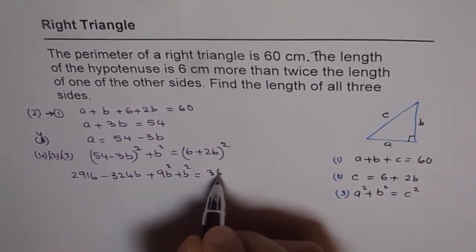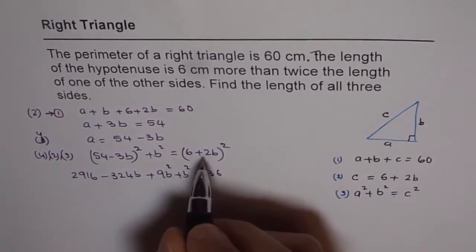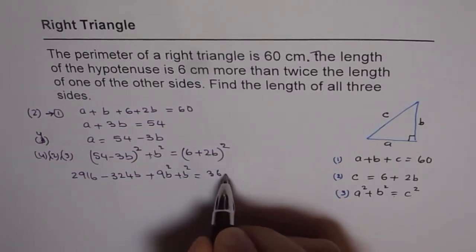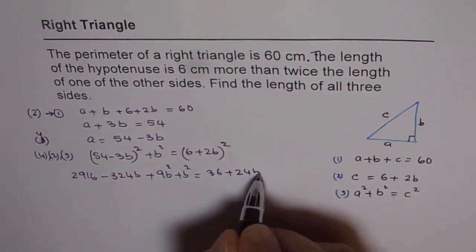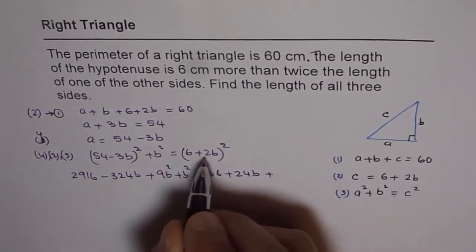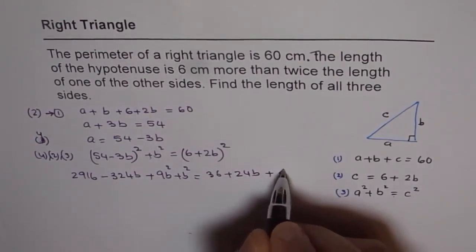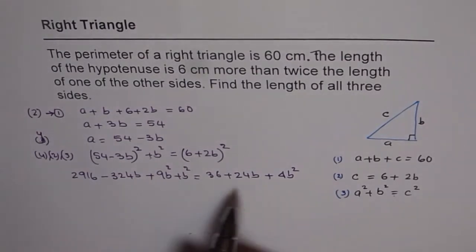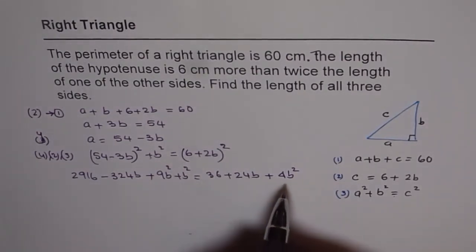6 square is 36, so 2 times 6 times 2b is 24b, plus 4b square. So we have this equation now in b.